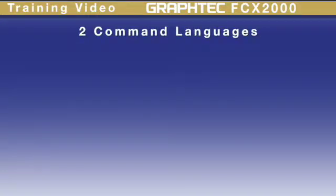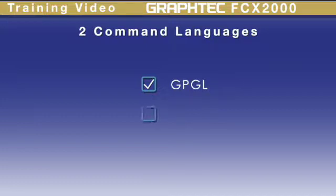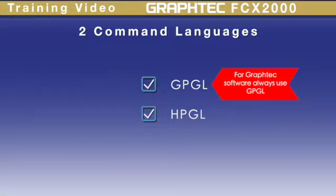The first step is to set the communication language. There are two languages that the FCX 2000 uses: GPGL, which is GrafTech's proprietary language, and HPGL, which is a generic language. Generally, if you plan to use the GrafTech Windows driver, Cutting Master 4, or GrafTech Pro Studio, the language should be set to GPGL.